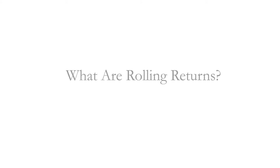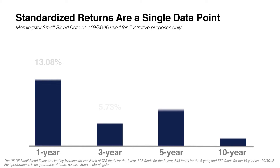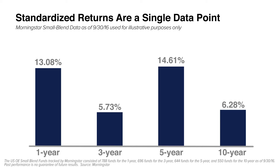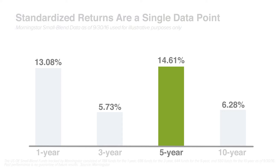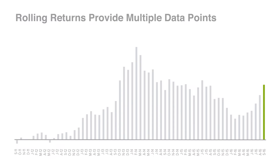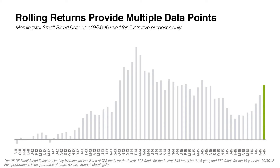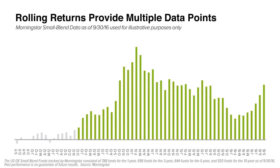What we find is a much more robust way to look at returns is to do so on a rolling basis. A rolling return is when you look at a period return, but you don't just look at it starting in January — you also look at it starting in February, March, and April, and you continue to move forward. This gives you many more data points for that period return, and you're seeing it over multiple months.